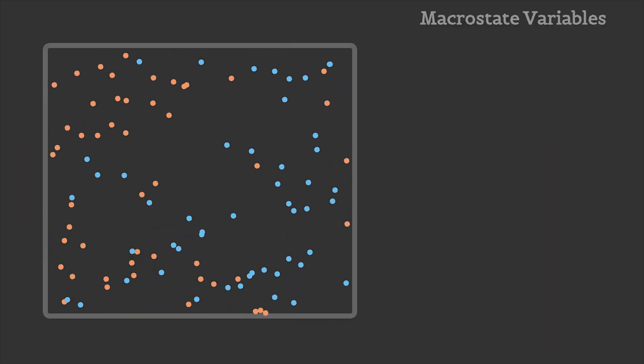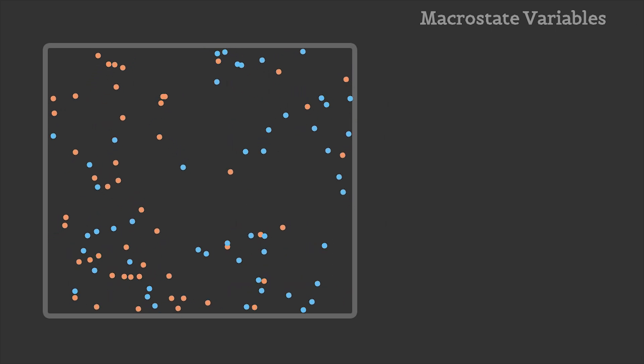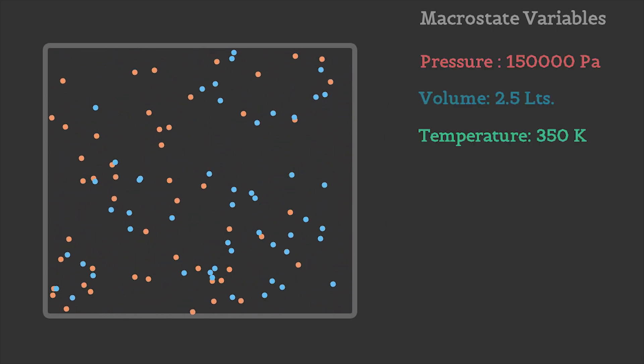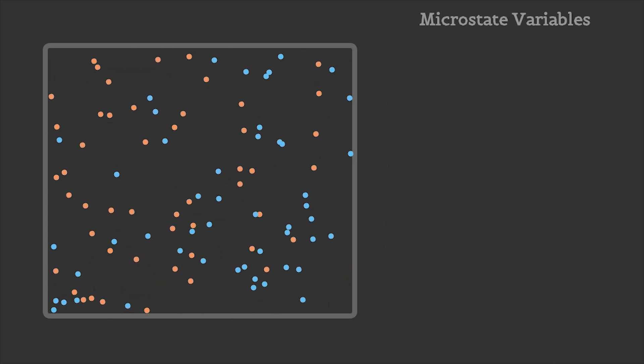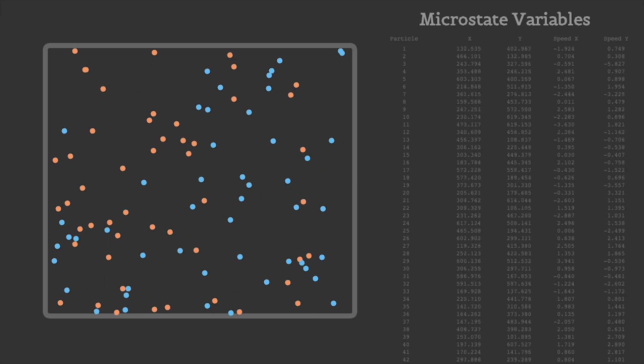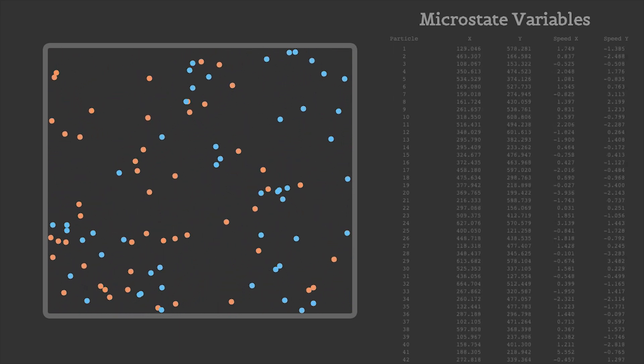In the case of gases, we have handy things called the pressure, volume, and temperature of a gas. If you have a system in front of you, the specific values of pressure, volume, and temperature signify a macro state of that system, while the position and velocity of each particle signify a micro state. We can see that for each specific macro state, there can be a large number of possible microstates. For the same pressure, volume, and temperature of a gas, the individual molecules can be in vastly different orientations.